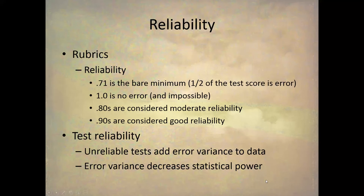All of these reliability methods give you a number between 0 and 1, which you can treat as a correlation. How do we evaluate that? The rubrics are: 0.71 is the bare minimum. With a reliability of 0.71, half of the test score is error and the other half is trait — that's not a good situation, but that's the bare minimum.